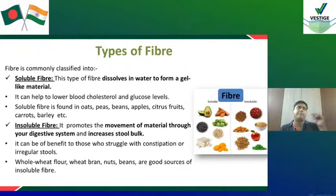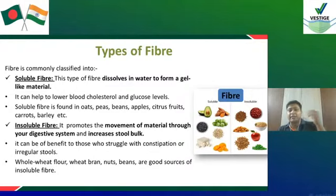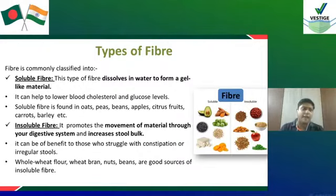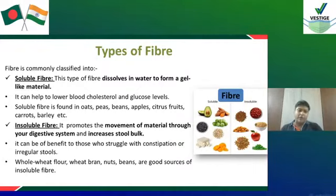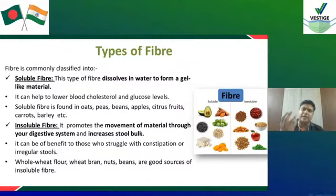Good sources of soluble fiber include oats, peas, beans, and barley. When you consume oats and barley, they form a gel in the digestive system.